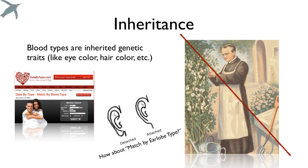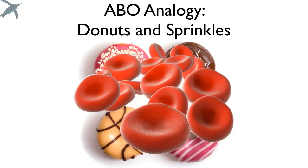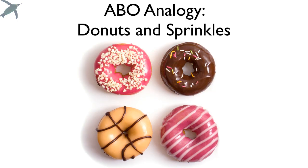So it gets a little bit complicated because we have three alleles. We're going to go through that. I'm going to have an analogy here. Red blood cells look a little bit like donuts — they don't have the hole in the middle, they have a little depression. But my ABO analogy, we're going to look at donuts and sprinkles.